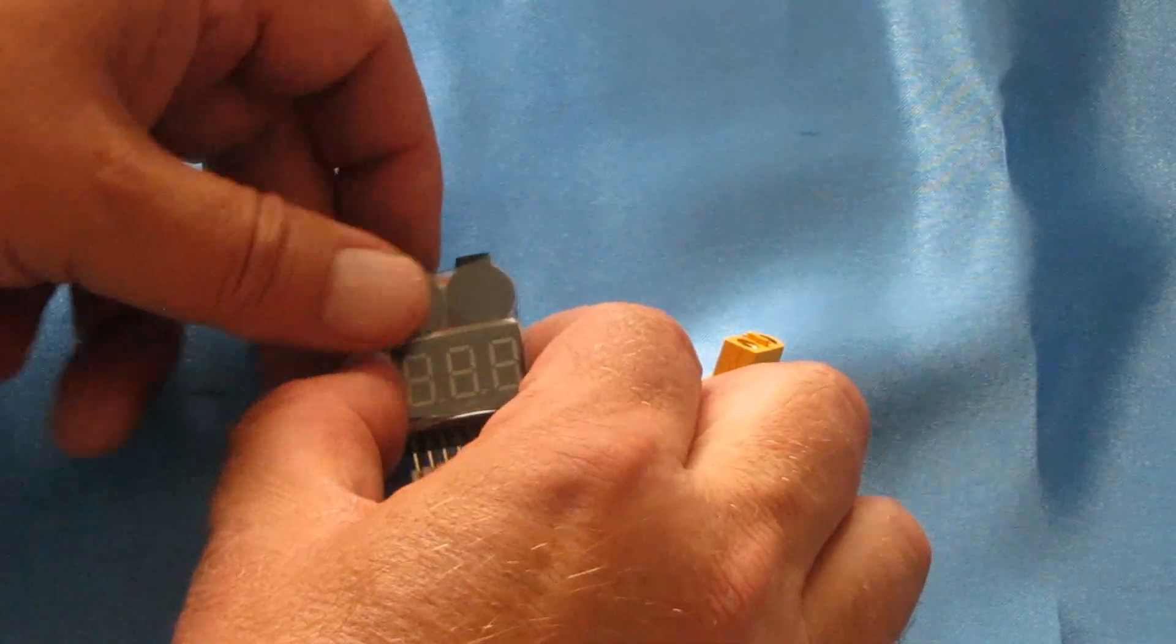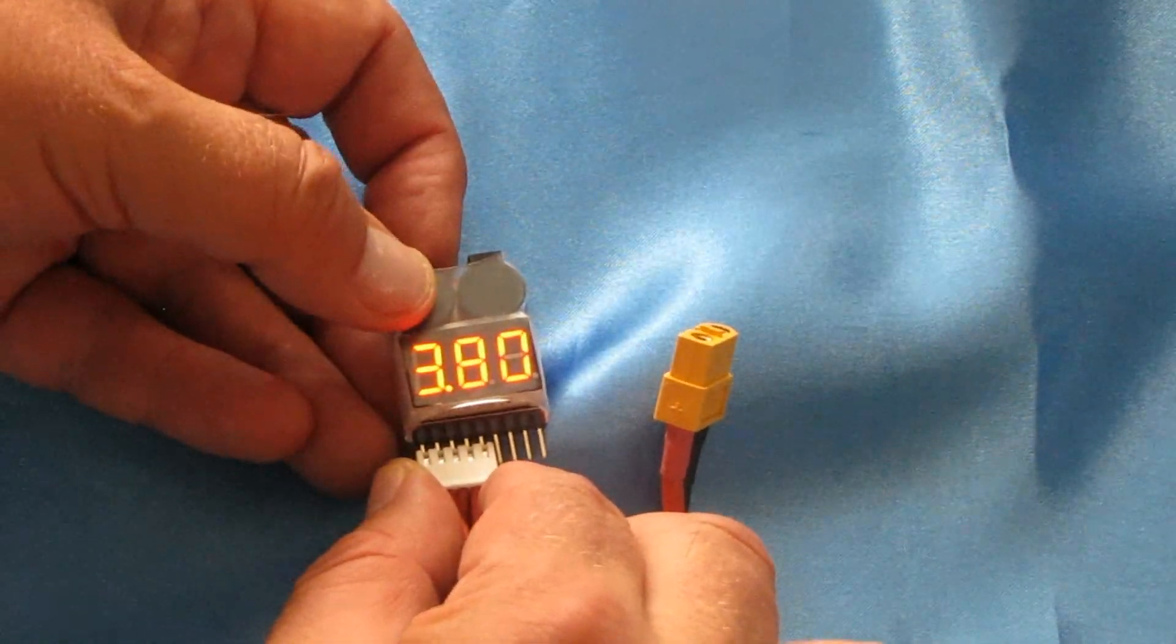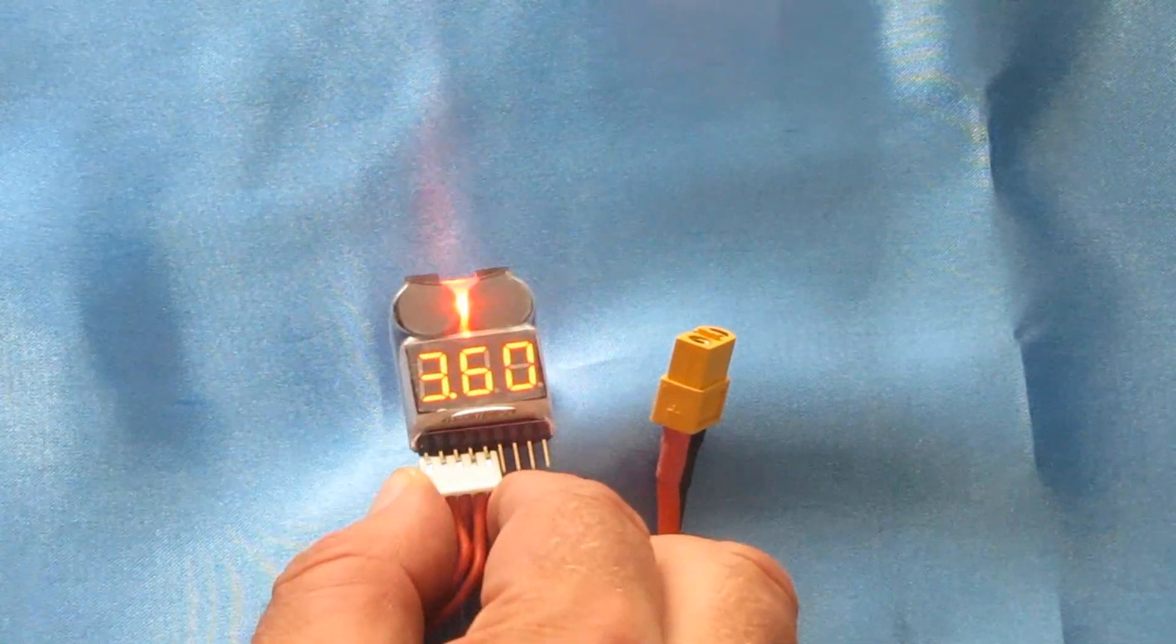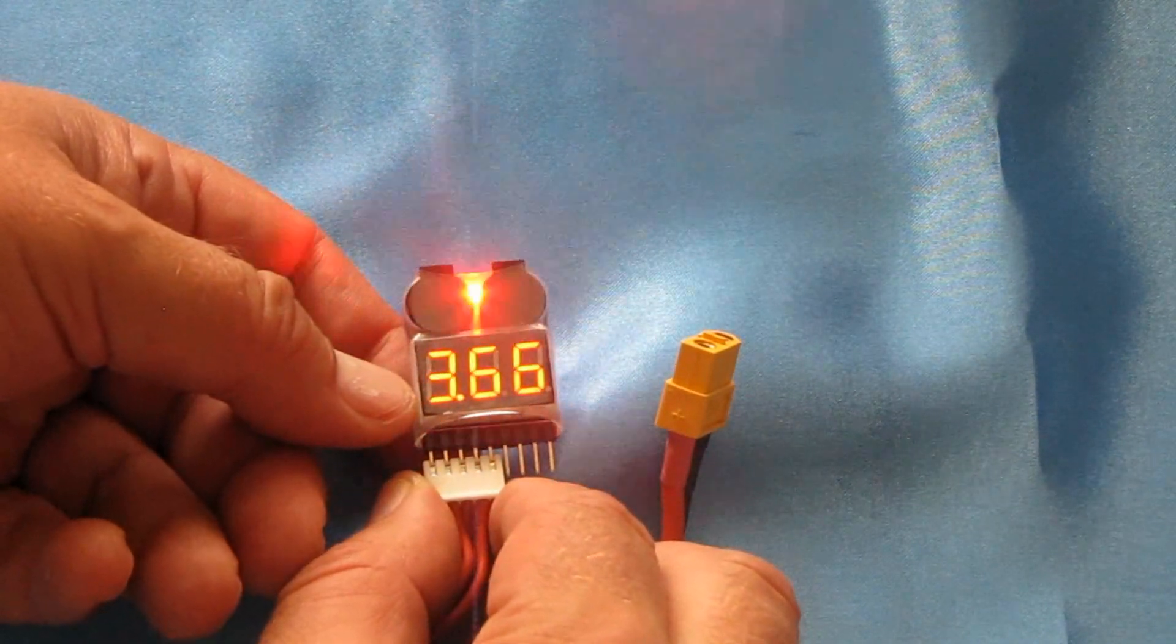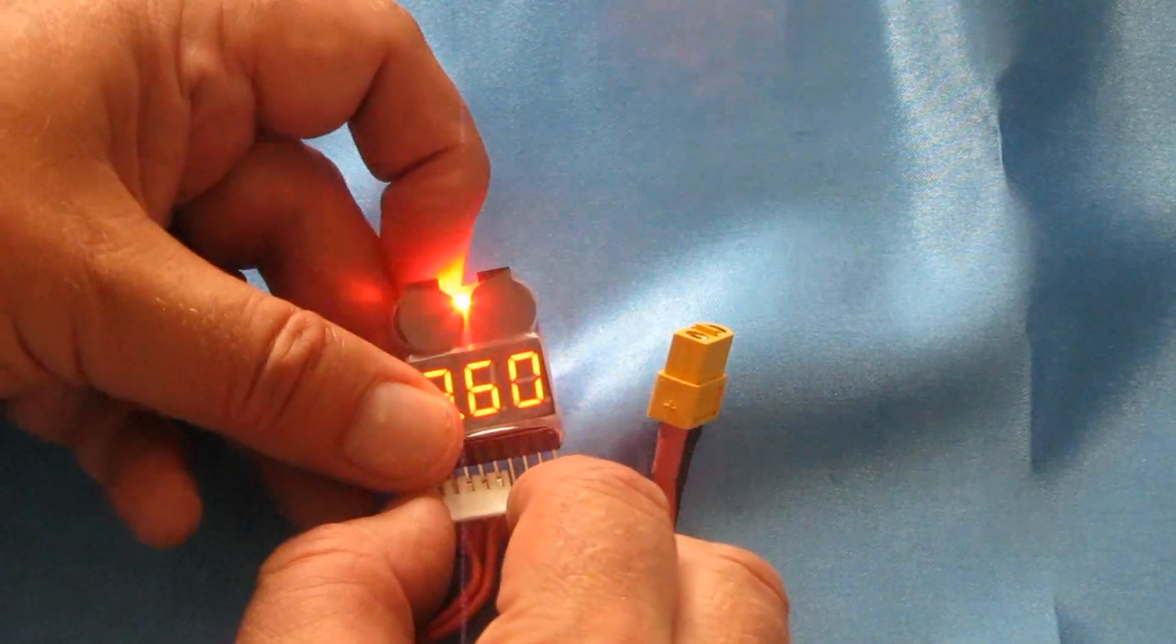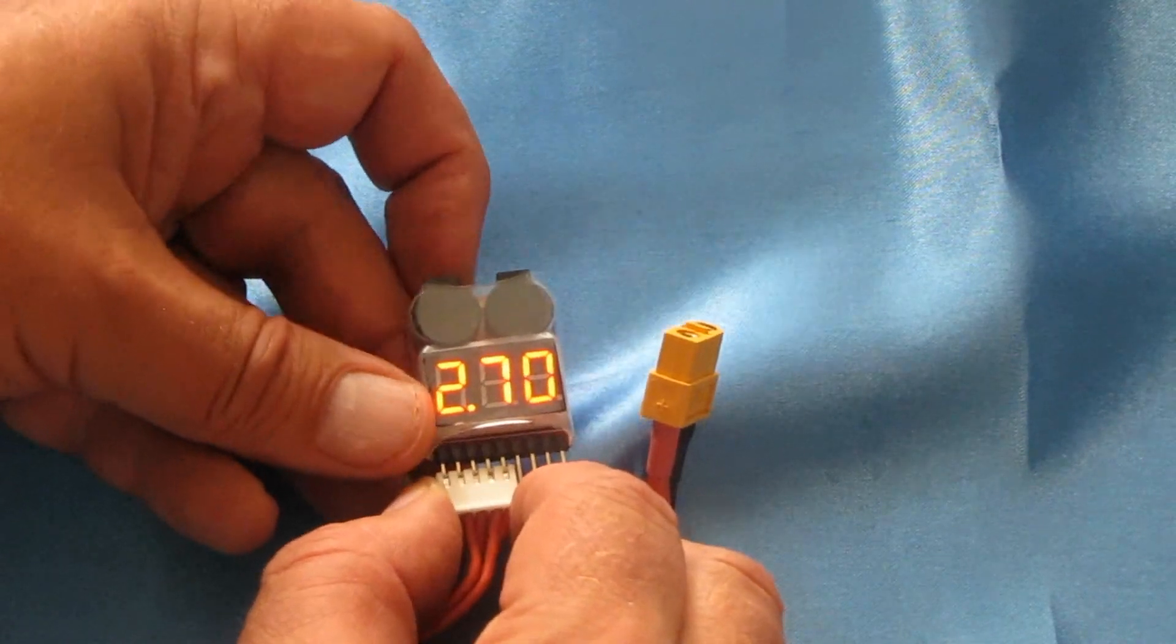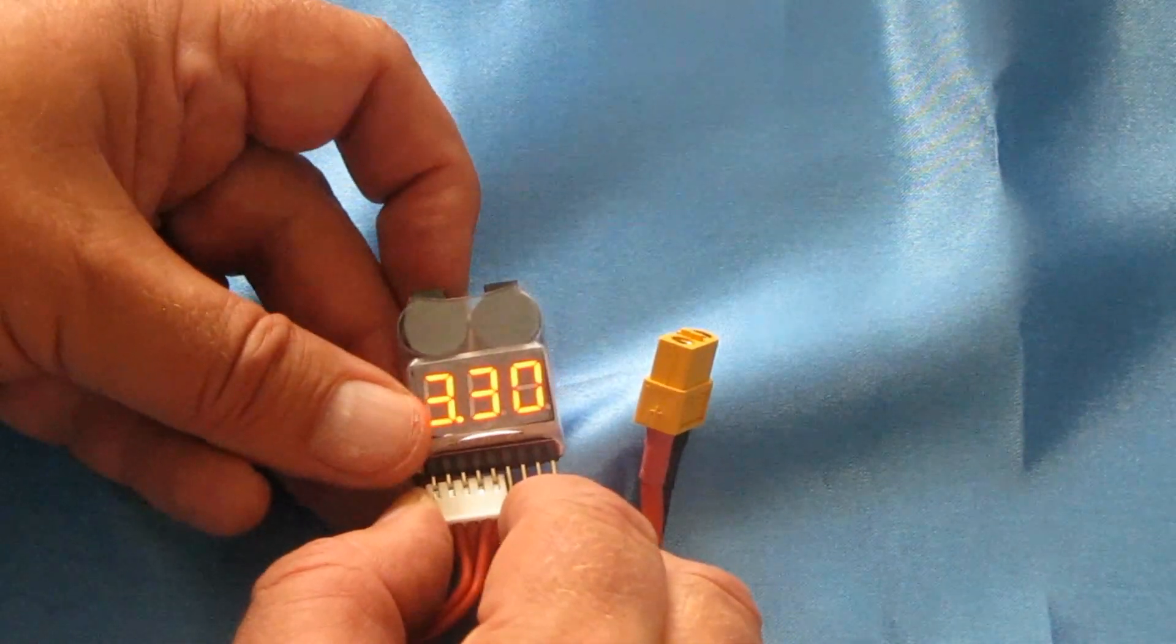What did I set that voltage low voltage warning to? So that should be pinging. Oh it is pinging. There we go. It's warning me. Cell 2 is low voltage. Cell 3 is low voltage. Cell 4 is low voltage. And that's because I set it to 3.7 or 3.8 volts. Let's cycle back to a normal reading of about 3.5. I like to set mine to 3.5 warning.